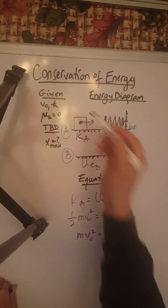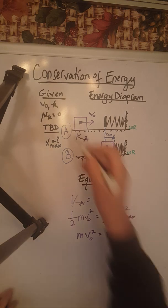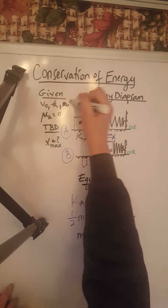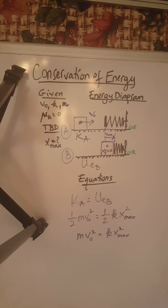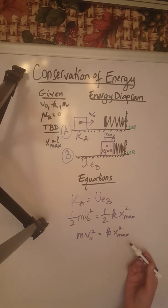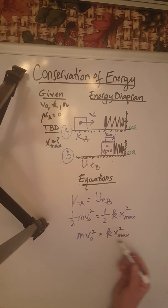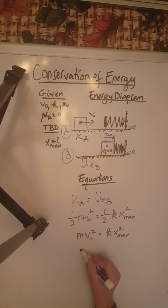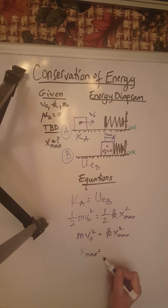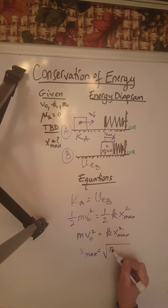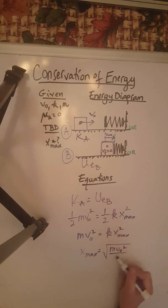And I forgot over there—here m was also given, so the mass of the object is also given. So therefore at this point we can calculate x max as being the square root of m v-naught squared over k.